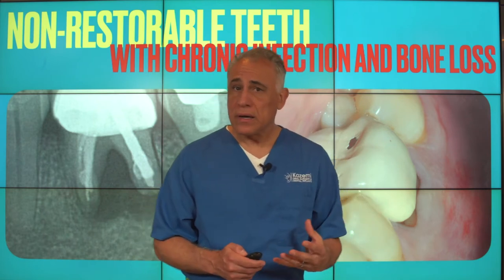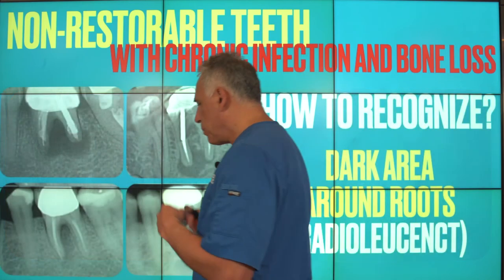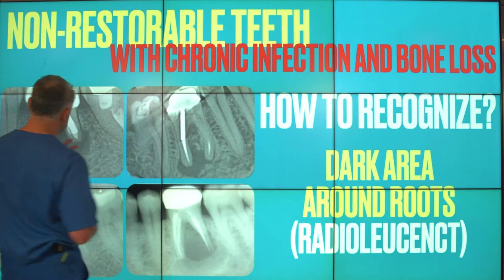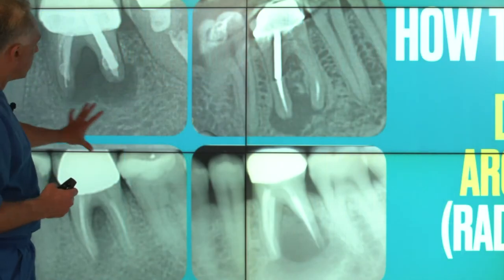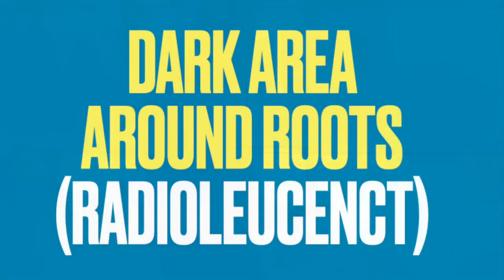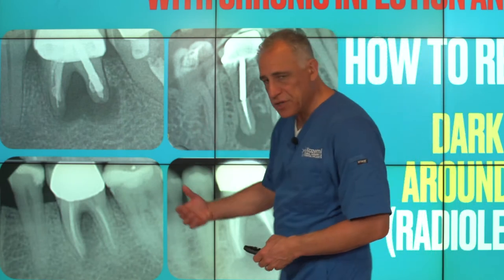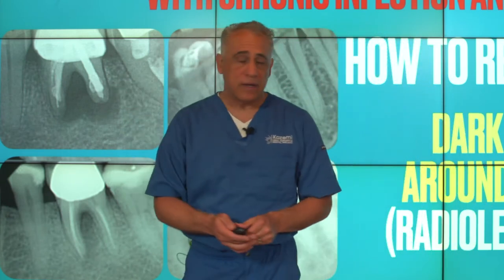So how can you recognize such a condition? Any type of dental infection or bone loss around teeth presents as dark areas around the roots. These dark areas are known as radiolucencies and they represent the loss of calcification and loss of bone around the root from the infection.